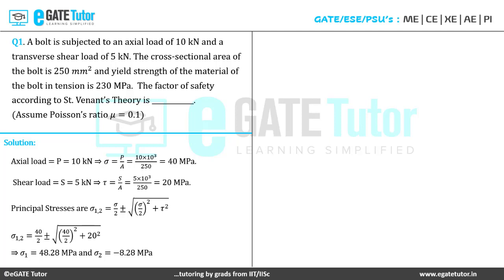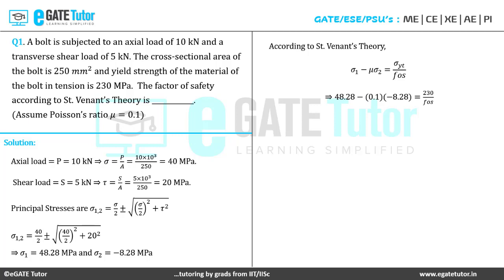According to Saint-Venant's theory, the failure condition in terms of principal stresses is: σ₁ − μσ₂ = σ_yt / FOS. With σ_yt = 230 MPa, substituting all corresponding values, the only unknown is the factor of safety. Simplifying, we get the factor of safety as 4.69.